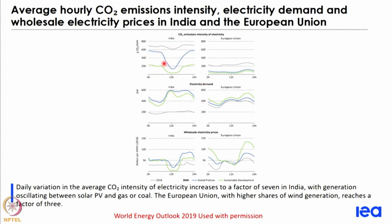If we have a large amount of renewables — as is projected with solar PV — during sunshine hours the CO2 intensity of the grid would be actually quite low. You can see the different shapes of the CO2 intensity versus time curve for India and Europe. Depending on at what time you are looking, the CO2 intensity would be different.